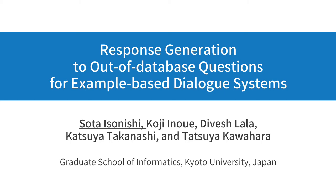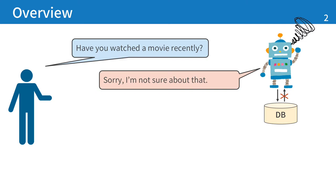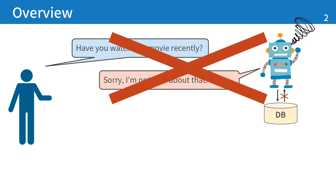Today, I'd like to talk about our approach to deal with out-of-database questions in example-based dialogue systems. This is the overview of this study. It's the situation where a user chats with a robot. When the user says, 'Have you watched a movie recently?' the robot searches its database. But in many cases, the question and its response are not in the database, and the system says, 'Sorry, I'm not sure about that.' The user feels the robot cannot understand the question and feels disappointed.